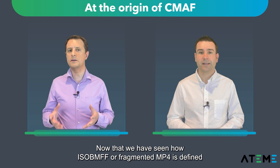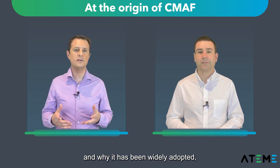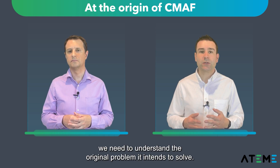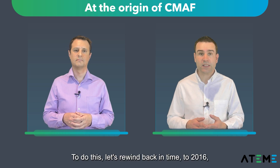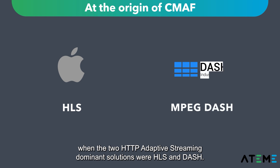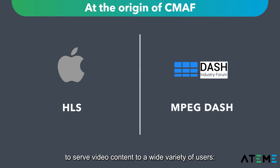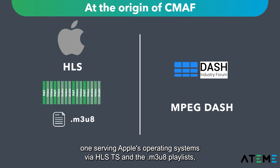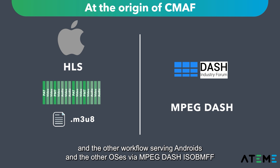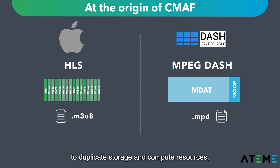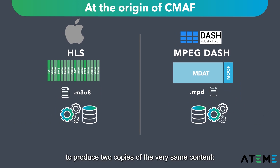Now that we have seen how ISO BMFF, or Fragmented MP4, is defined and why it has been widely adopted, let's focus on what CMAF is and how it relates to these standards. To really understand CMAF, we need to understand the original problem it intends to solve. Let's rewind back to 2016, when the two HTTP Adaptive Streaming dominant solutions were HLS and DASH. We ended up having two workflows running in parallel: one serving Apple's operating system via HLS MPEG-TS and the M3U8 playlist, and the other serving Android and other OSs via MPEG-DASH ISO BMFF and the MPD manifest. These two coexisting standards forced broadcasters to duplicate storage and compute resources to produce two copies of the very same content — one in MPEG-TS and the other in Fragmented MP4.